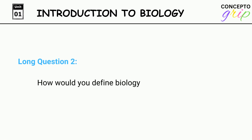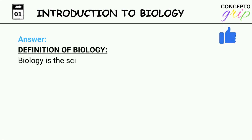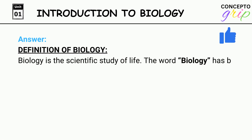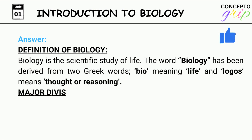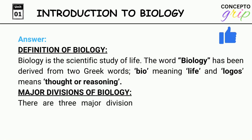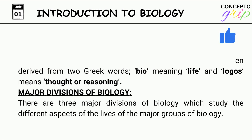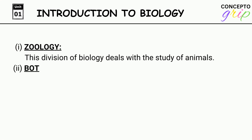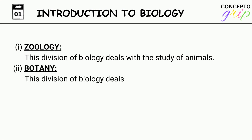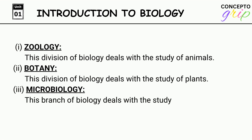Long question 2: How would you define biology and relate it with its major divisions? Answer. Definition of biology: Biology is the scientific study of life. The word biology has been derived from two Greek words — bio meaning life and logos meaning thought or reasoning. Major divisions of biology: First, Zoology — deals with the study of animals. Second, Botany — deals with the study of plants. Third, Microbiology — deals with the study of microorganisms such as bacteria, etc.